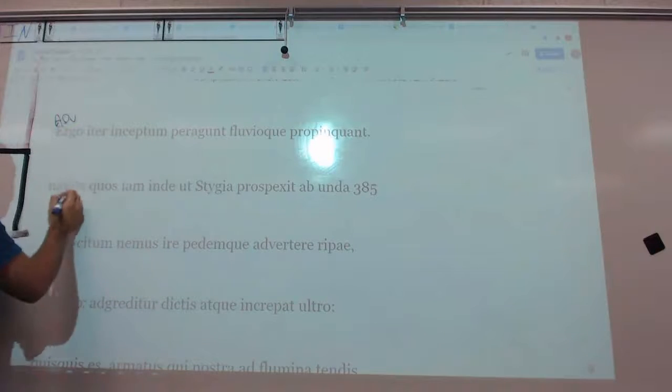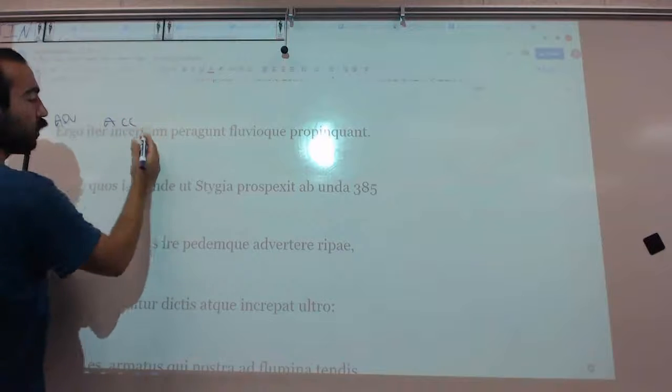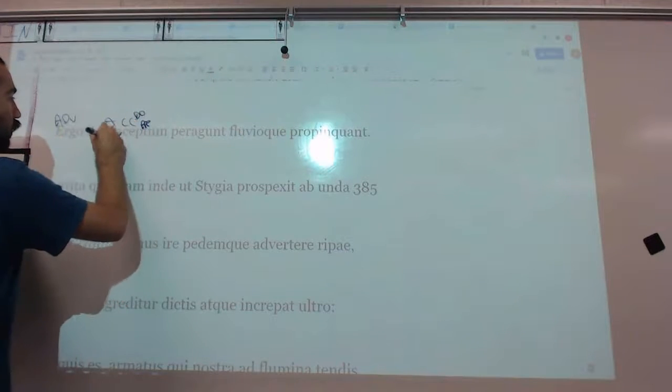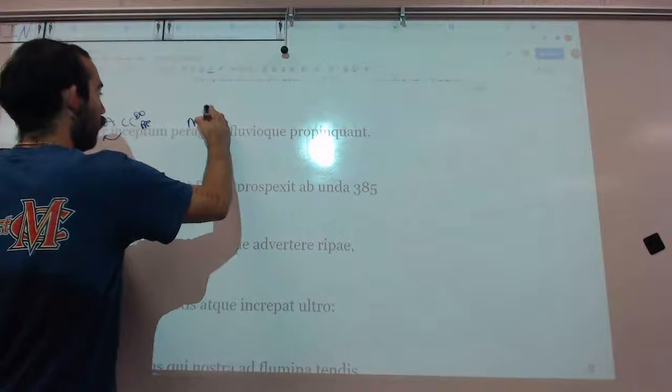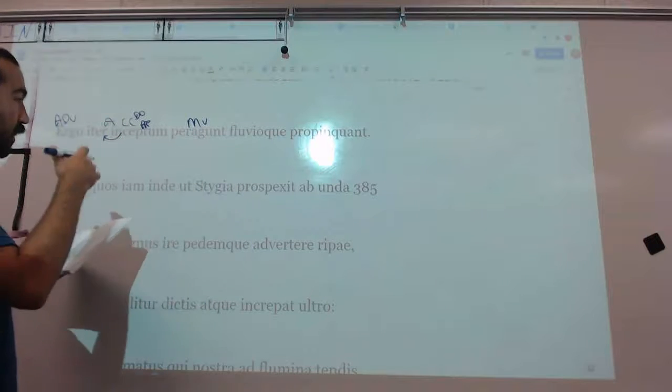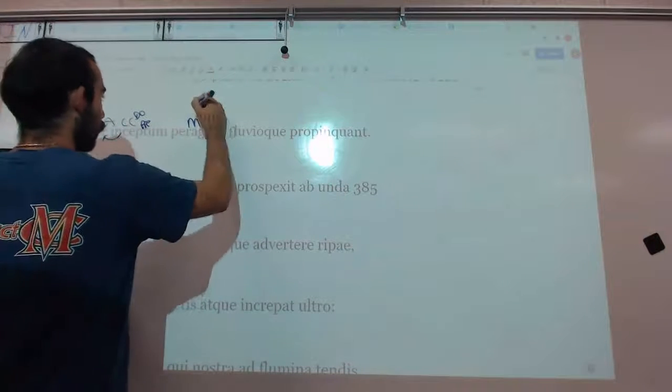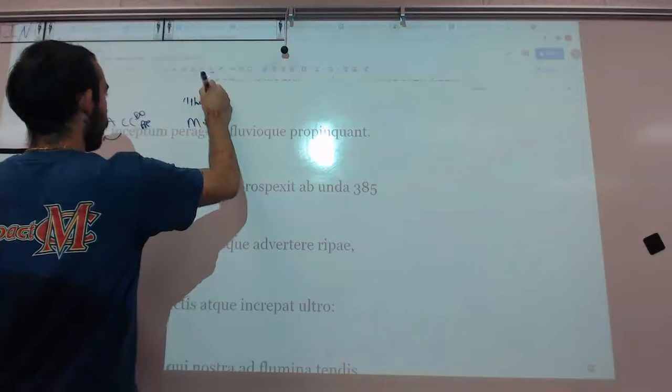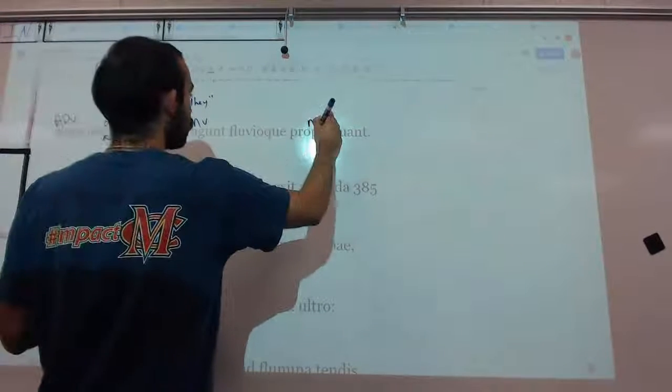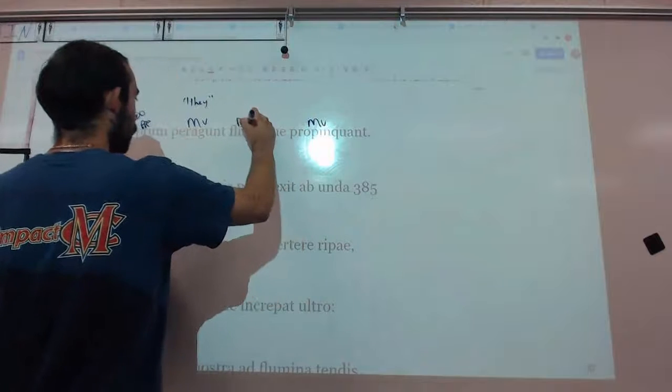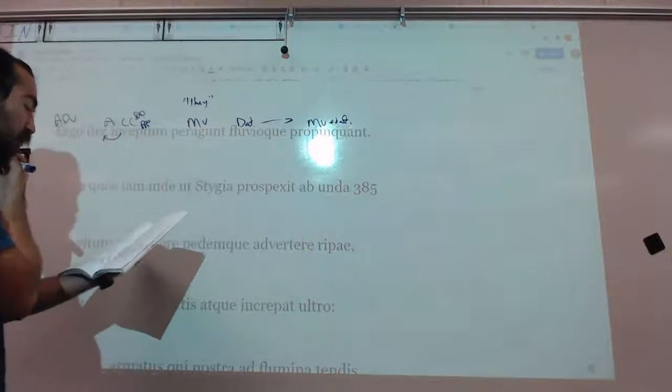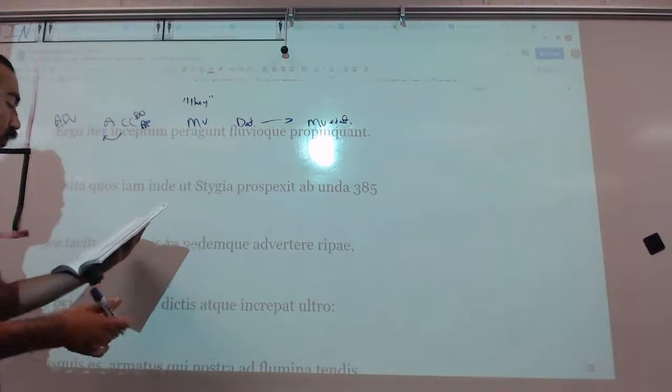Ergo inter. I'm going to try and go pretty quickly here. They finished, they accomplished, being the Sybil and Aeneas, their journey having been started, and they approached the fluvio. This is a dative with this verb, propinquo, and appropinquo, same word pretty much, which is to approach.